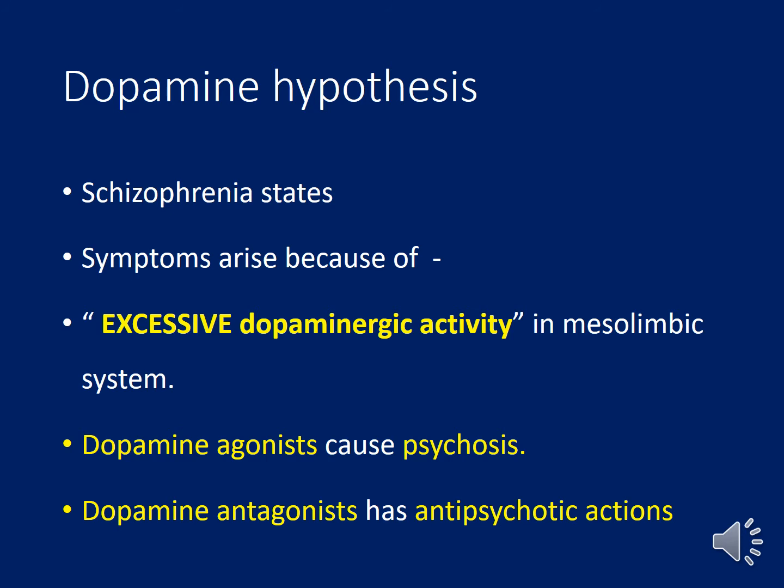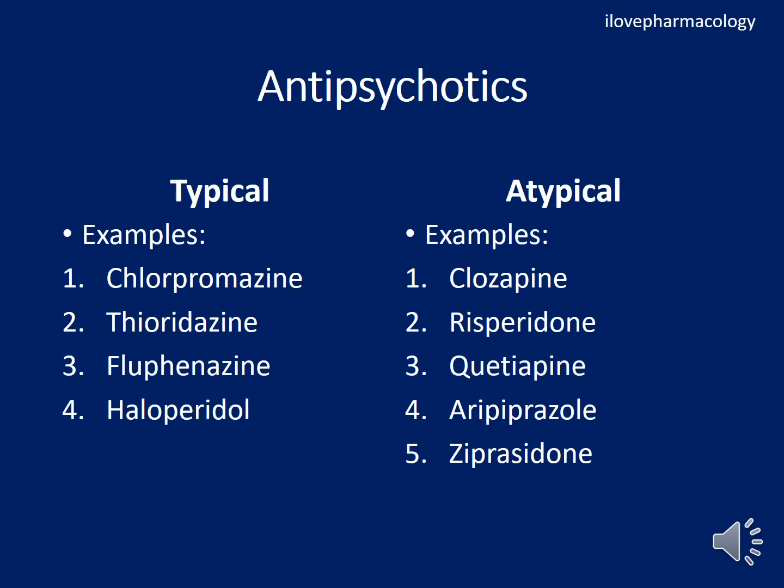The dopamine hypothesis helps explain why schizophrenia occurs. Schizophrenia symptoms arise due to excessive dopaminergic activity in the mesolimbic system. Dopamine agonists will cause psychosis, and dopamine antagonists will produce antipsychotic action. This leads us to the differences between typical and atypical antipsychotics.